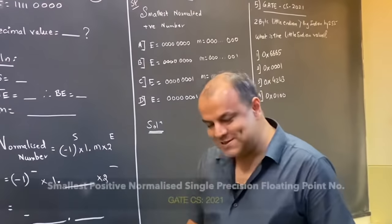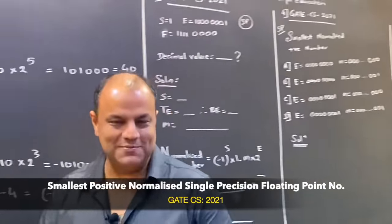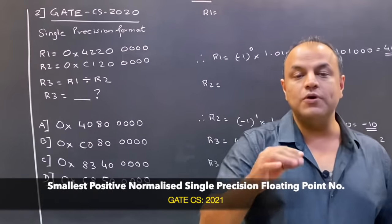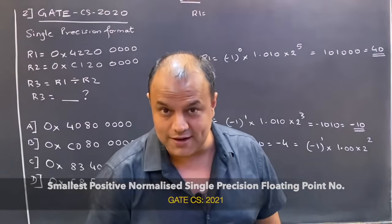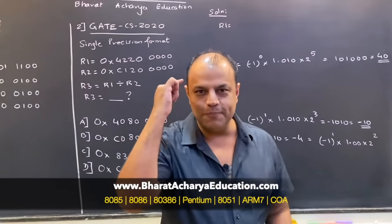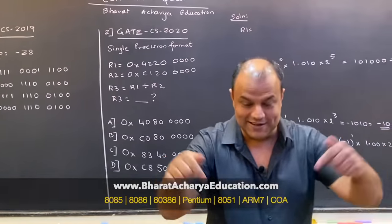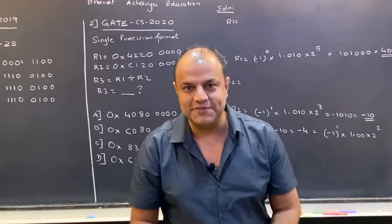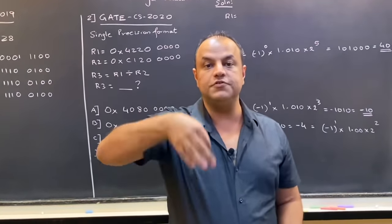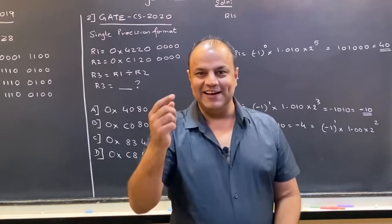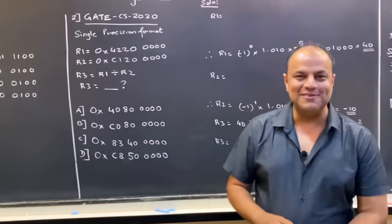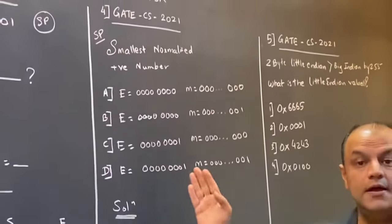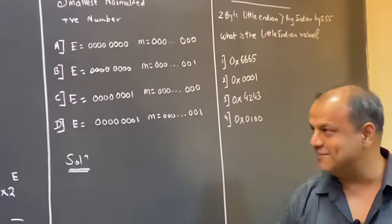The next question is straight out of one of our videos — a few months back I made a video showing extreme cases of floating point numbers and said clearly this is only if you're preparing for entrance exams. Coincidentally, in this year's gate exam a question was asked straight out of that discussion. The question is: what is the smallest possible positive normalized number that can be stored in single precision format? They've given four options which are almost identical, trying to confuse you as much as possible.